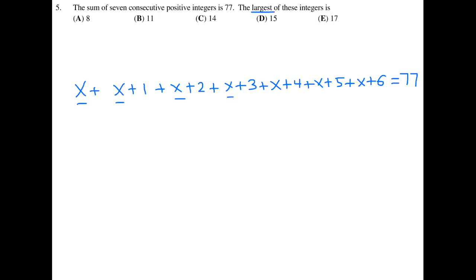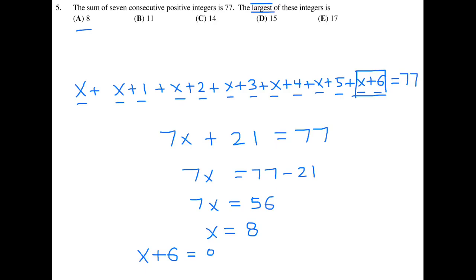How many x's do we have? We have 7 x's. Then we add up 1, 2, 3, 4, 5, and 6, which is 21. That equals 77. Solving for this, we get 7x equals 56, and therefore x is equal to 8. They're not asking for x equal to 8, so don't make that mistake by choosing A. They're asking for the largest of these integers, which was x plus 6. So x plus 6 is equal to 8 plus 6, which is 14. The answer here is C.